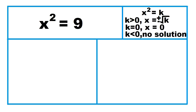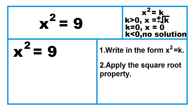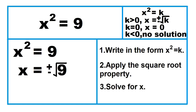Example: x squared equals 9. The equation is already in the form x squared equals k, where k is greater than 0, meaning there are two solutions. So x equals the positive square root of 9 or the negative square root of 9. Therefore, x equals 3 or x equals negative 3.